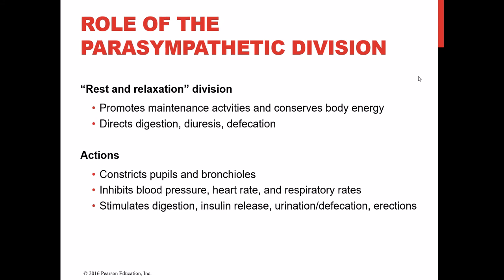The parasympathetic system lowers blood pressure, slows heart rate, and slows respiratory rate — it's the rest-and-relaxation division. It inhibits blood pressure, heart rate, and respiratory rate, but stimulates digestion and the release of insulin from the pancreas, which is very common after we eat. It also stimulates urination and defecation and plays a role in erections of the external genitalia.